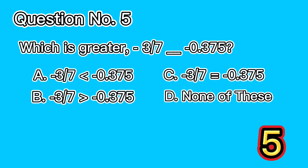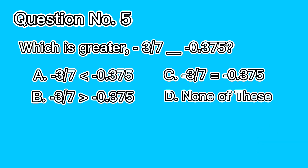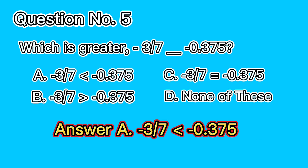5, 4, 3, 2, 1. Answer A. Negative 3 over 7 is less than negative 0.375.